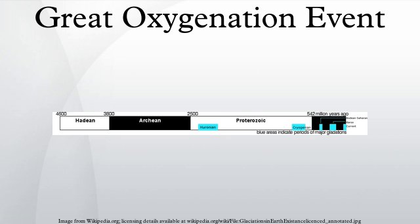Eventually, aerobic organisms began to evolve, consuming oxygen and bringing about an equilibrium in its availability. Free oxygen has been an important constituent of the atmosphere ever since.